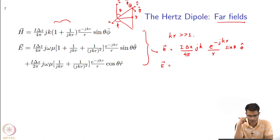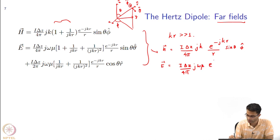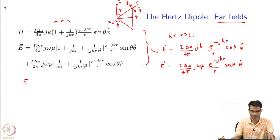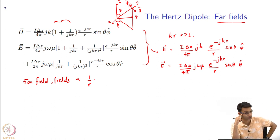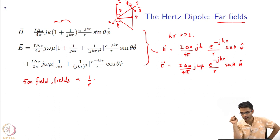What happens to the electric field? There are 5 terms, and I keep only the most leading term, which gives: (I·Δz / 4π) · jωμ · e^{-jkr}/r · sin(theta) · theta-hat. So in the far field the fields go as 1/r in amplitude as a function of r. We have already made one comment about how this is different from Coulomb's law.